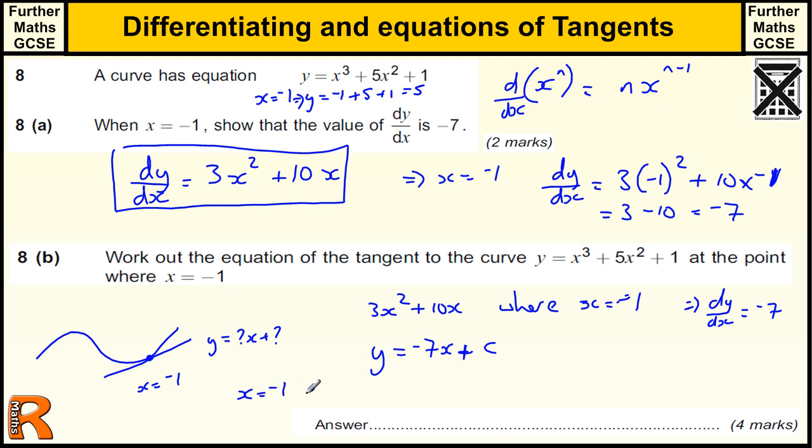When x is minus 1, y equals 5. So 5 equals minus 7 times minus 1 plus the value we're looking for. 5 equals minus 7 times minus 1 is 7 plus the constant, so that tells us that c equals minus 2, because minus 2 plus 7 is 5. So our equation is y equals minus 7x minus 2. Now we have it.